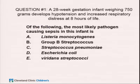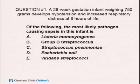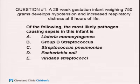Question 1: A 28-week gestation infant weighing 750 grams develops hypotension and increased respiratory distress at eight hours of life. What's the most likely pathogen? The choices are Listeria, Group B Strep, Strep Pneumoniae, E. coli, or Viridans Strep. The right answer is E. coli.